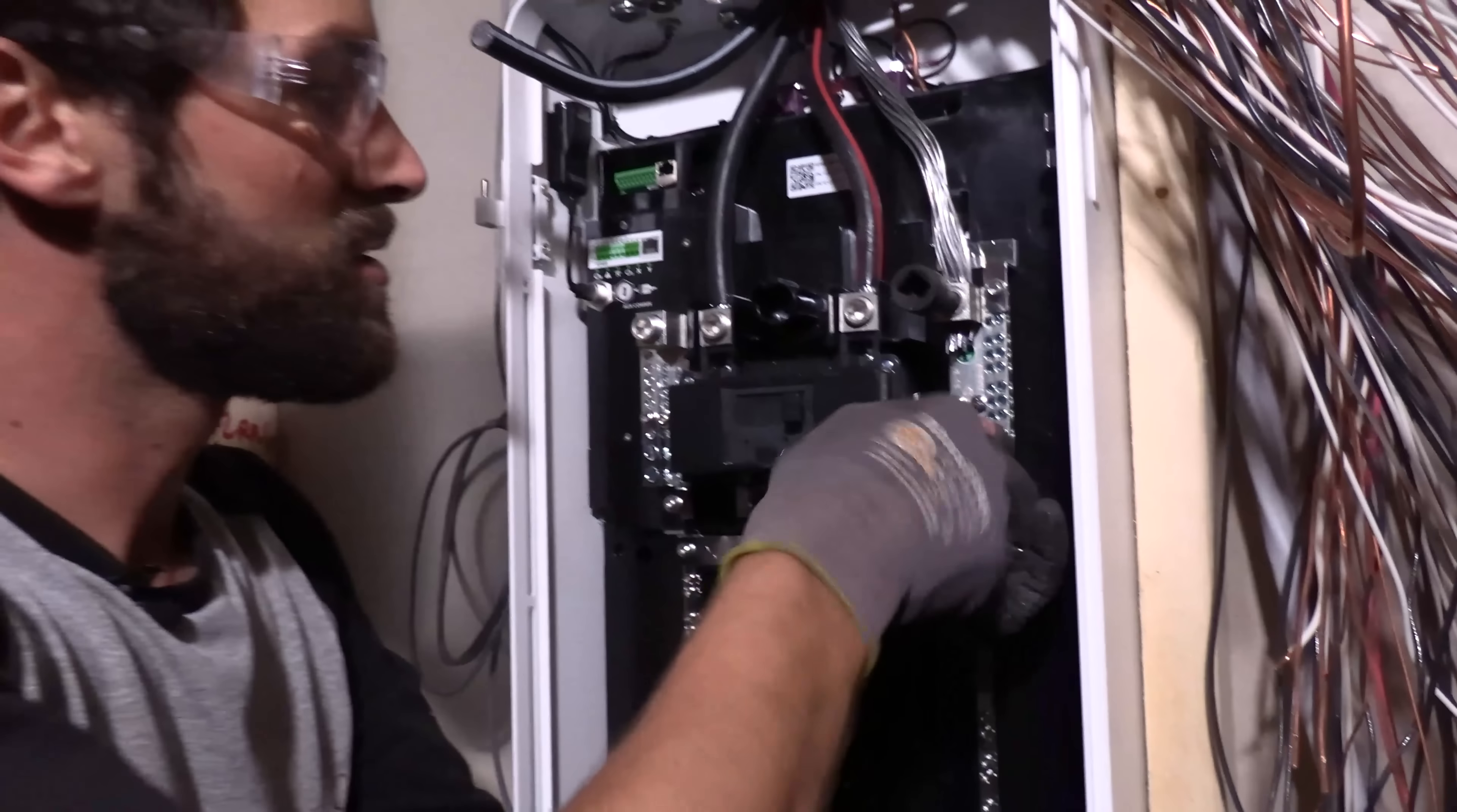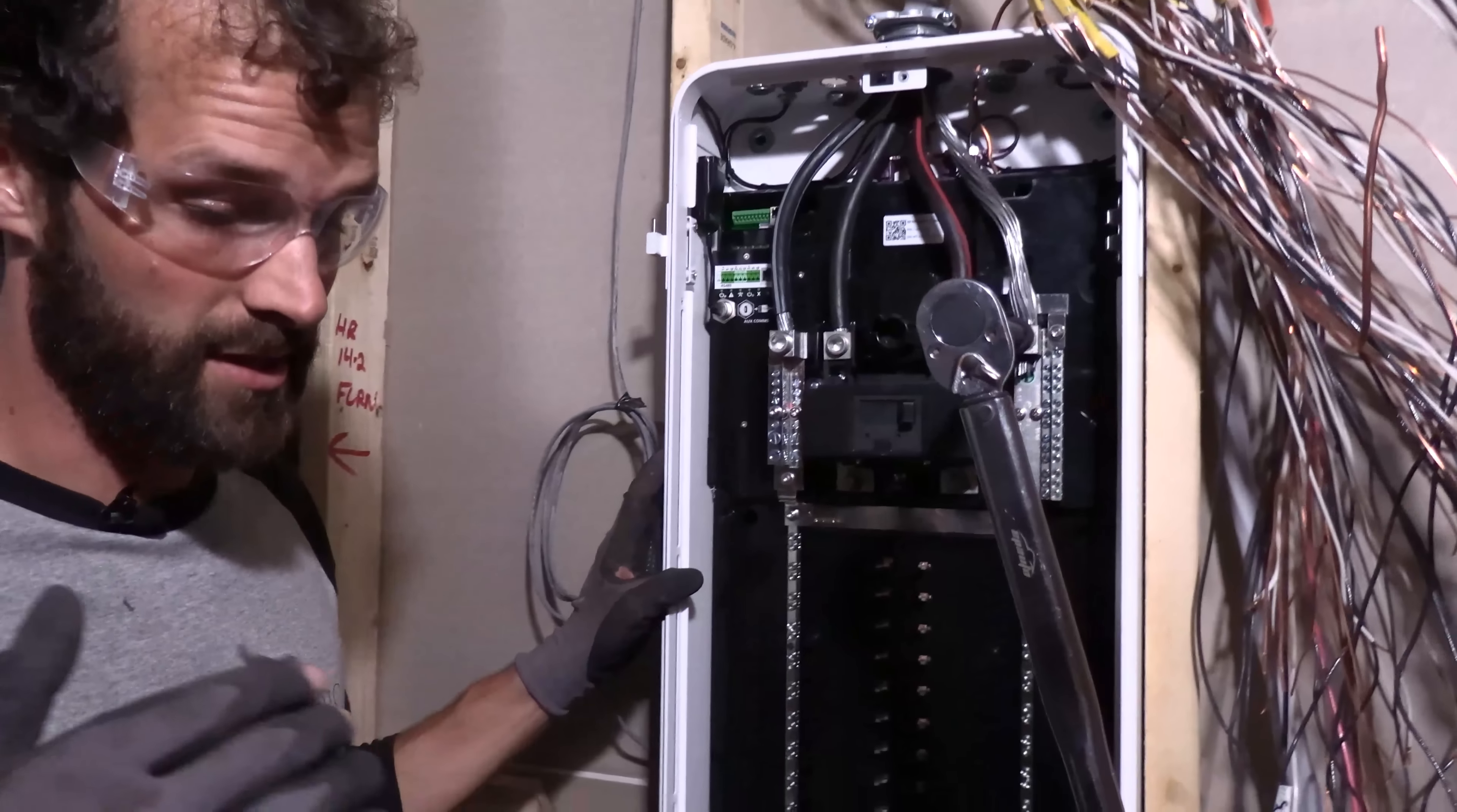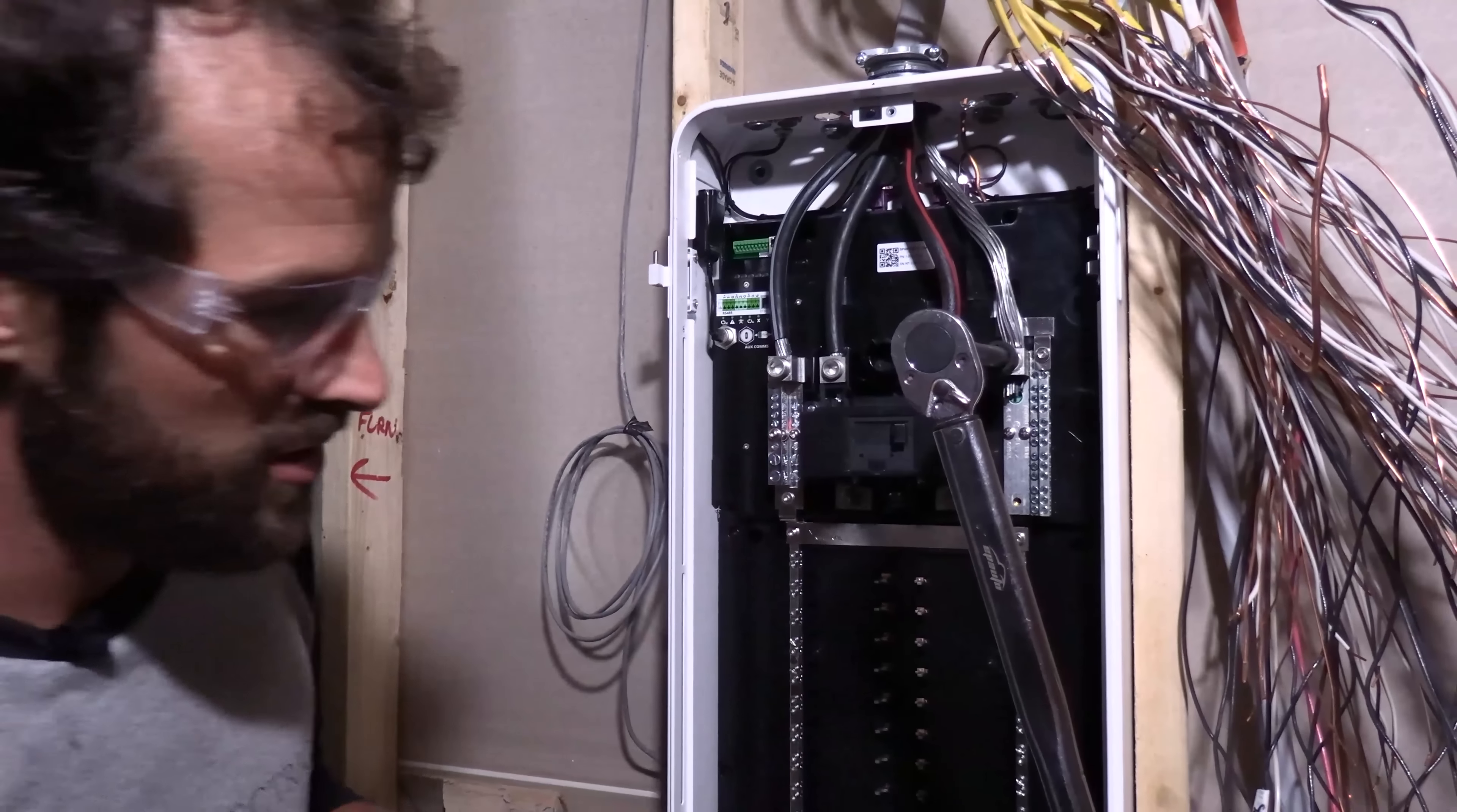They tighten them down all the way, because in transit, those things will rattle free. You'll have a cabinet full of small parts. But it is a little disappointing to have to go through and open them all up. So approved main breakers for span are the QOM 2200VH. This is rated for 22,000 amps of interrupting current. All the torque specifications are inside the main door of the span panel. It's 250 inch pounds for all of these.